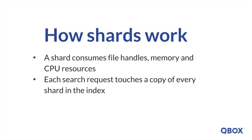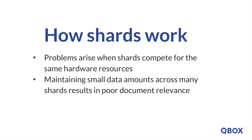It's good to remember that there's an additional cost for each shard that you allocate. Since a shard is essentially a Lucene index, it consumes file handles, memory, and CPU resources. Each search request will touch a copy of every shard in the index, which isn't a problem when the shards are spread across several nodes. Contention arises and performance decreases when the shards are competing for the same hardware resources. Elasticsearch uses term frequency statistics to calculate relevance, but these statistics correspond to individual shards. Maintaining only a small amount of data across many shards will tend to result in poor document relevance.